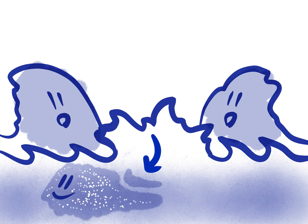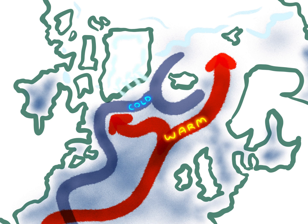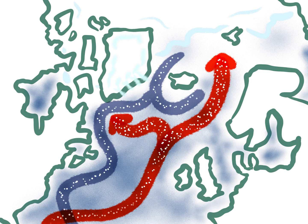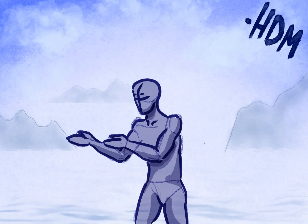To summarize: surface water goes north, deep water goes south, and an overturning occurs when the surface current sinks at northern latitudes to form a southward-flowing deep current. This all happens because of differences in temperature as well as salinity — thermohaline, you remember? Now let's go back to the story of Greenland.